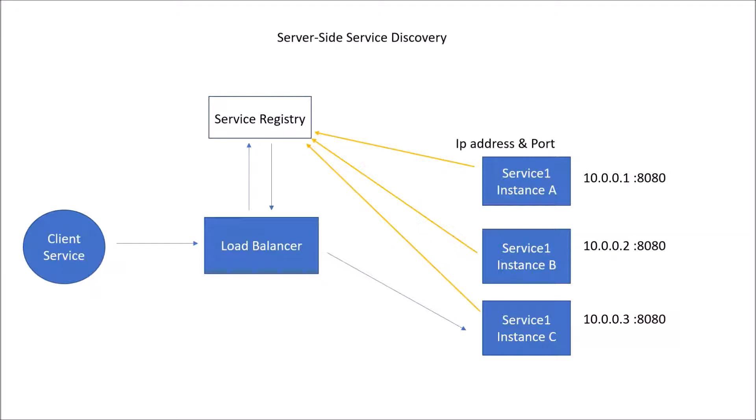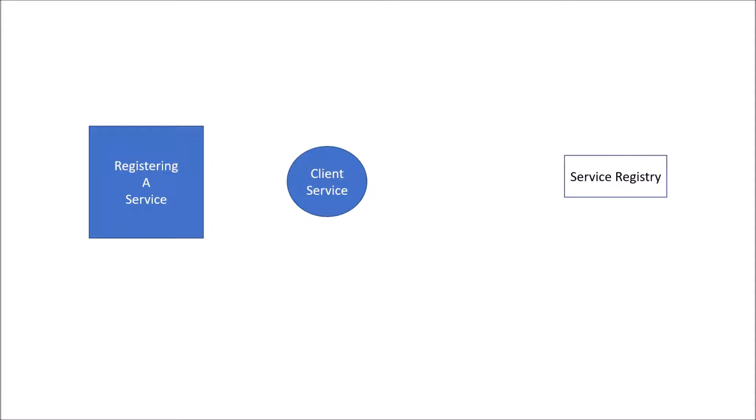Now let's understand what happens during registration of a service. Suppose we have a client service and a service registry, and the client service needs to register itself. The first thing the client service needs to know is the location of the service registry — the IP address and port of the service registry is used inside the client service code. With the network location of the service registry available, the client service sends a request containing the service name and its own IP address and port. Inside the service registry, these are stored as key-value pairs, where the service name is the key and the IP address and port is the value.